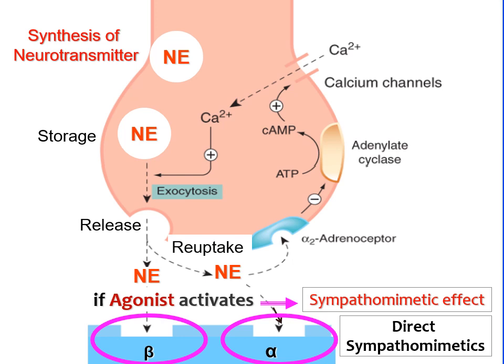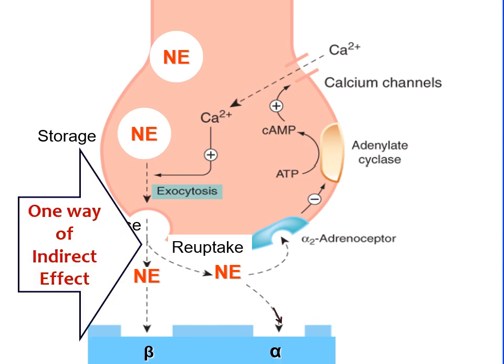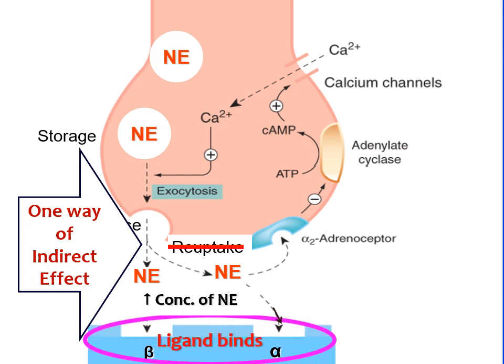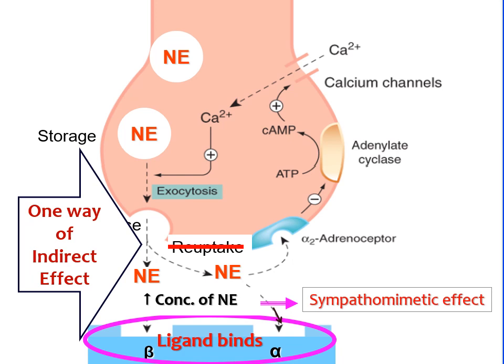Usually drugs that bind directly to receptors are known as direct sympathomimetics. The second group is indirectly acting drugs, which act in two ways. One way is they block the reuptake, which is the major fate of released norepinephrine, so all the released norepinephrine remains available in the synapse. This increased concentration of norepinephrine then binds to alpha and beta receptors and produces sympathomimetic effects. This is one mechanism of indirect sympathomimetics.